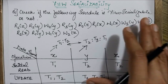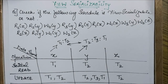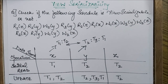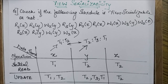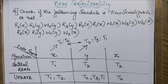Since both orders are contradictory, no view serializable order is possible. Therefore this schedule is not view serializable, and hence it is not a serializable schedule. That's all for this case — see you in the next video with more useful topics. Till then, stay tuned and happy learning.